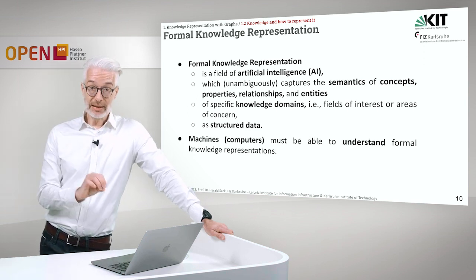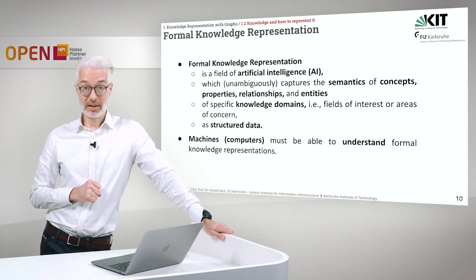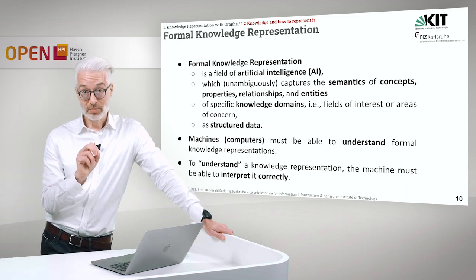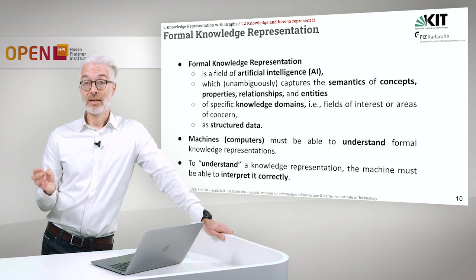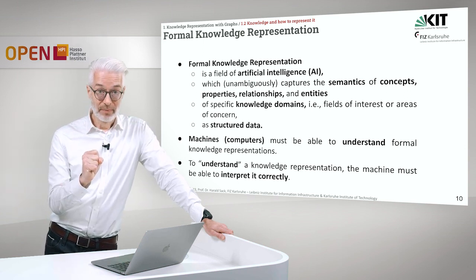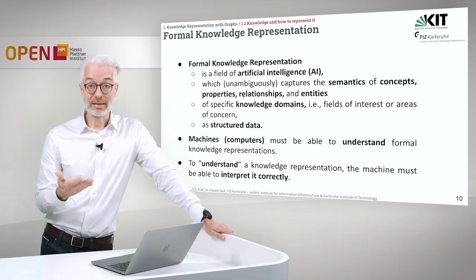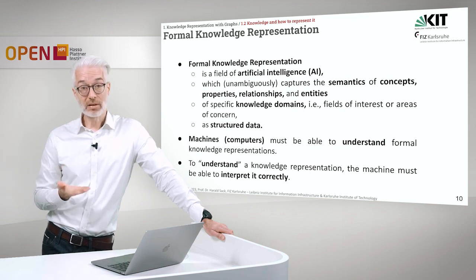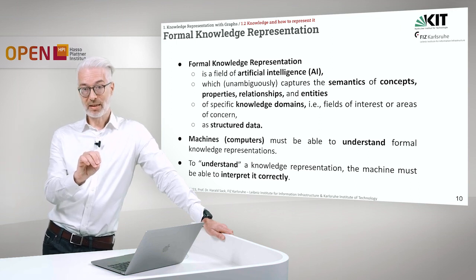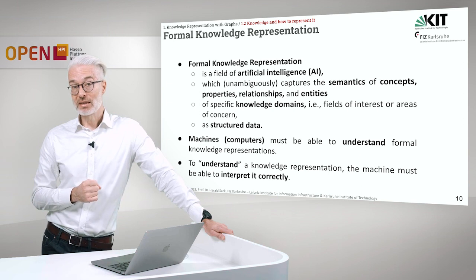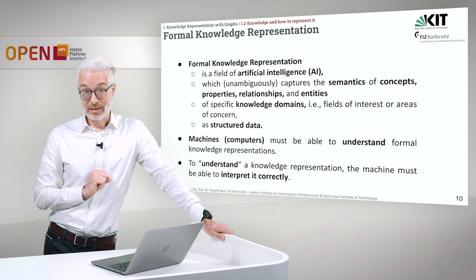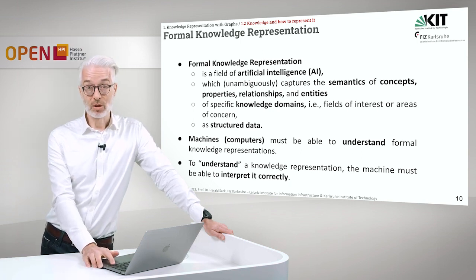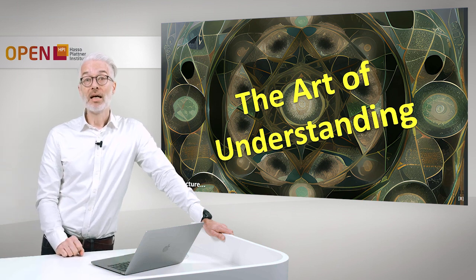The principal goal is that machines and computers must be able to understand formal knowledge representations. What does it mean to understand? To understand a knowledge representation, the machine must be able to interpret it in a correct way — in the way it is intended. Correct interpretation is the key. If we enable a computer to always interpret our formal knowledge representations correctly, we guarantee that the machine is able to — in double quotes — understand what we mean: it interprets the meaning in the correct way as intended. In the next part of the lecture, we will look at the art of understanding.